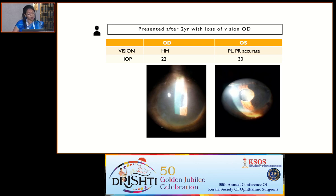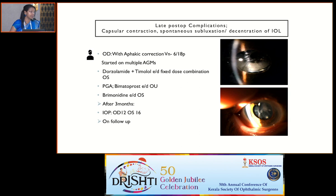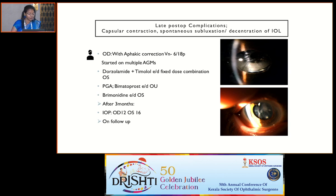Two years later, the patient presented with loss of vision in the right eye — vision had dropped to hand movements and IOP was 22. What had happened was a spontaneous dislocation of the IOL posteriorly. The left eye vision had also dropped to perception of light and IOP was 30. These patients can have capsular contraction and fibrosis, with spontaneous subluxation or decentration of the IOL. The plan is removal of the IOL with thorough vitrectomy and secondary IOL implantation with vitreoretinal surgical assistance. Meanwhile, aphakic correction was given, improving vision to 6/18, and the patient is on multiple anti-glaucoma medications especially for the left eye.